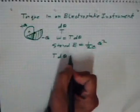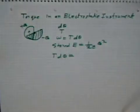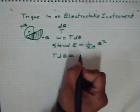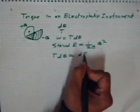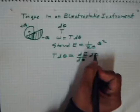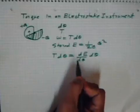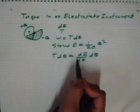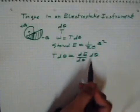That means the decrease of stored energy is equal to the work done. That means Tdθ is the decrease of stored energy, that is dE/dθ times dθ.